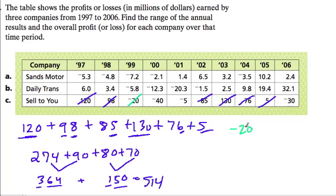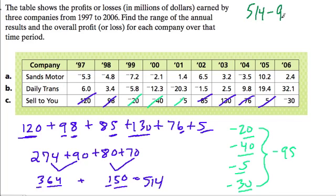Now the losses. Negative 20, negative 40, negative 5, nice whole numbers here. Negative 30. Altogether, negative 30 and 20 is negative 50, negative 90, negative 95. And when we add these two, we can write that as 514 minus 95, and that will represent our profit.